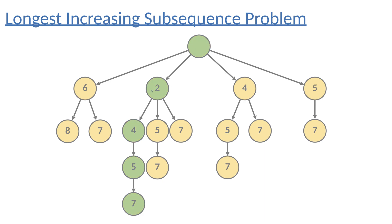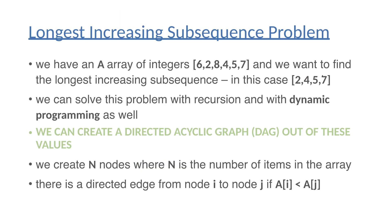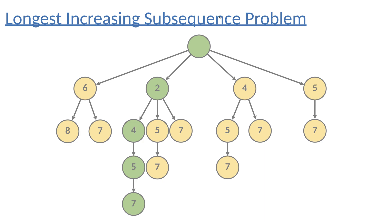Now we have to find the longest path in this directed acyclic graph. We can do it using topological ordering in linear time complexity, and the result will be 2, 4, 5, and 7 — which is indeed the correct answer. We can solve this with recursion, but there are overlapping subproblems, so dynamic programming is a better approach since it calculates each subresult only once. In conclusion, we can transform dynamic programming problems into directed acyclic graphs and use shortest path or longest path approaches to solve them, as demonstrated by the longest increasing subsequence problem.